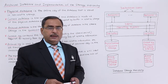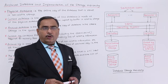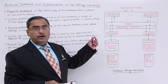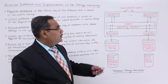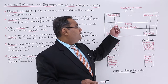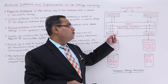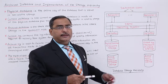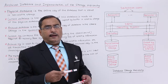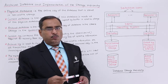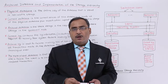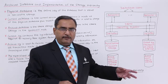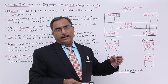Now, here we have database users who are working or interacting with application programs — application program 1, 2, up to application program n. These applications are interacting with the database, and the database is working on the platform of the operating system. The transactions are producing two types of data: one is log information and the other is data information — the data which is going to be saved, updated, and so on.